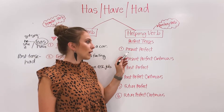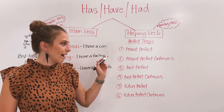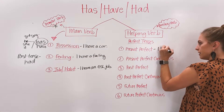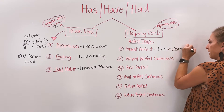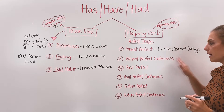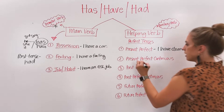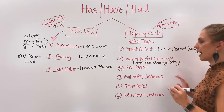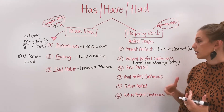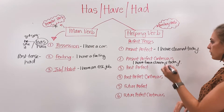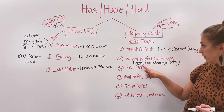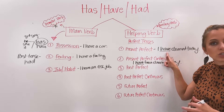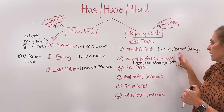In the present perfect tense, for example: I have cleaned today. The present perfect continuous tense would be: I have been cleaning today — something that you were continuing to do. As you can see, have is the helping verb here, while clean or cleaning is the main verb. Have helps the main verb in explaining what we're talking about.